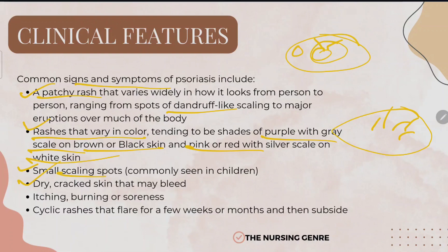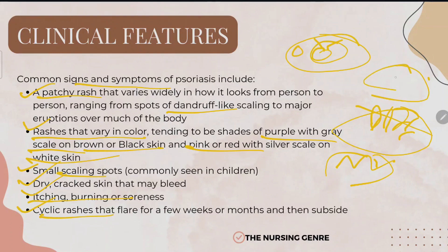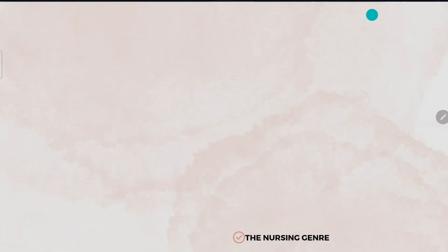Other clinical features include dry, cracked skin that may bleed, as well as itching, burning, and soreness. Psoriasis also presents with cyclic rashes — flare-ups followed by periods of remission with normal-looking skin — lasting a few weeks or months at a time.